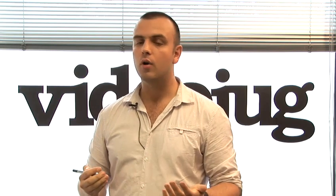Finally, another game that involves both the periodic table and maths is to give a series of equations expressed in terms of elements, the atomic numbers of which correspond to the sum. For example, you could give the sum: oxygen times lithium, plus neon, divided by helium, gives you which element. This would require finding the atomic number for these elements, completing the sum, and then working out which element it corresponds to. In this case the answer would be 17, which should be chlorine.